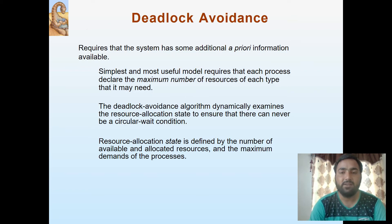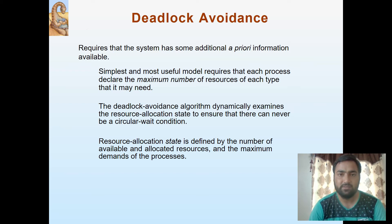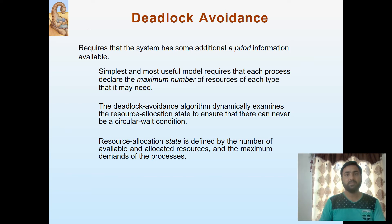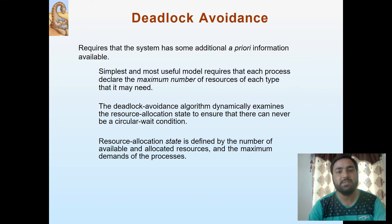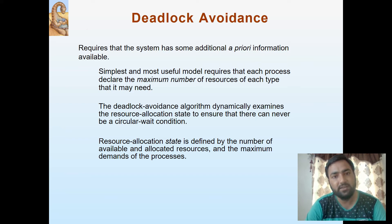Now comes deadlock avoidance. Deadlock avoidance requires that the system has some additional prior information available before the deadlock may happen. Whenever a process is requesting for resources, the need of the process must be defined in advance, so that the deadlock can be avoided. The simplest and most useful model requires that each process declare the maximum number of resources of each type that it may need.